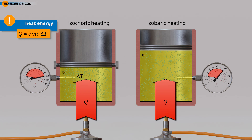Such as ambient pressure and the weight of the piston. This expansion of the gas against the external forces requires energy in the form of work. The heat energy supplied must therefore be used in part to increase the volume and is therefore no longer completely available for increasing the kinetic energy of the molecules and thus for increasing the temperature.